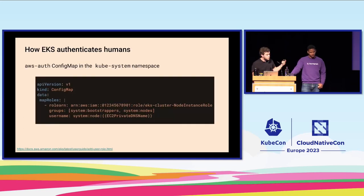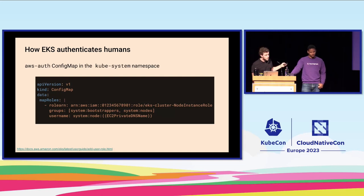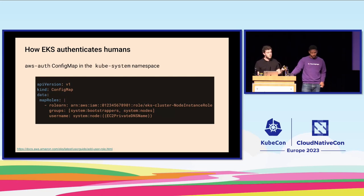This is the default config map you have in an EKS cluster. It basically maps AWS identities to Kubernetes groups. In this case, the default one tells you that nodes should have system node permissions. But as we can see, Kate didn't create the cluster and she's not in there, so she doesn't have any permissions.